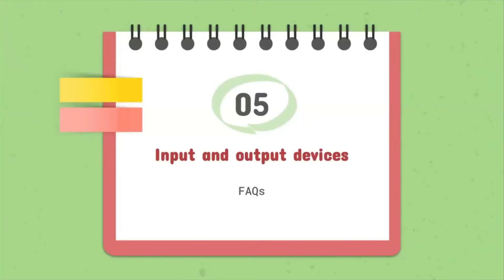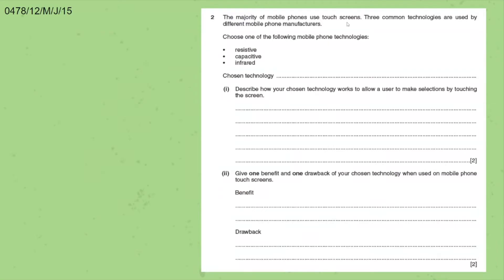The fifth chapter is input and output devices. There are a lot of FAQs for this chapter and they are all interesting and long answer type ones. The first question is: the majority of mobile phones use touch screens. Three common technologies are used by different mobile phone manufacturers. Choose one of the following: Resistive, Capacitive, or Infrared. Describe how your chosen technology works to allow a user to make selections by touching the screen — that is, they are asking the process of that technology.